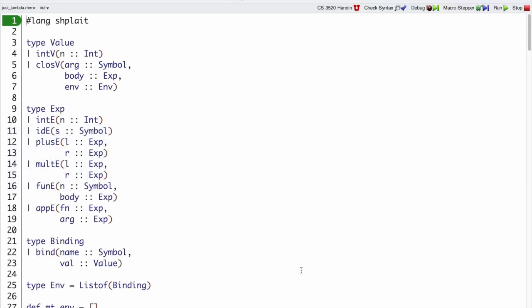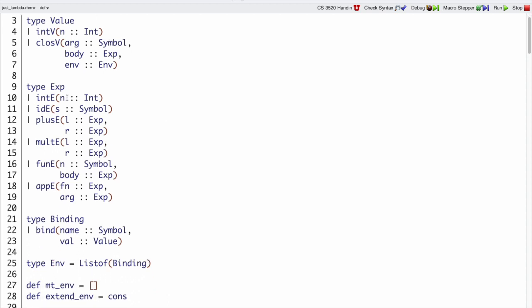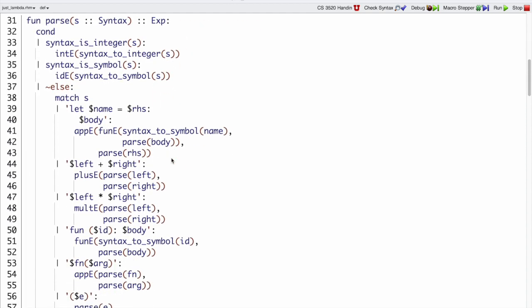And if we change our interpreter to work this way, then you can see in my expression type now, I have fun e, but no let e anymore. If I look at the parser, there is still a let case in my parser, but it doesn't generate a let e. There is no let e. Now it generates an app e with a fun e.